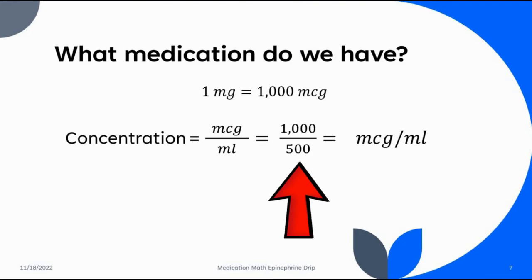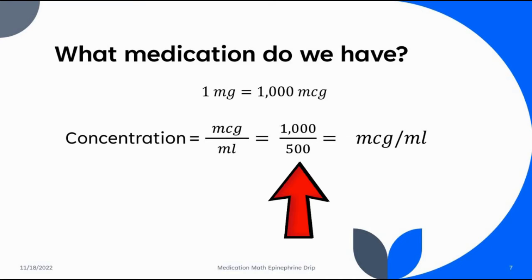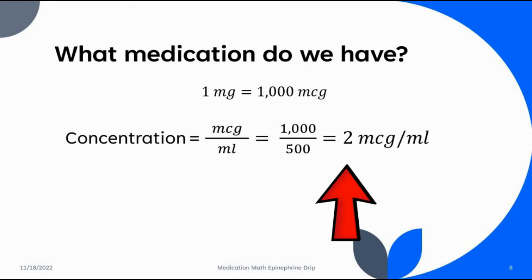We have one milligram of epi. We convert that to a thousand micrograms. We have a thousand micrograms in the top line and we have a 500 milliliter bag on the bottom. A thousand divided by 500 should get you a concentration of two micrograms per milliliter. Not bad, not too complicated a math there, right?